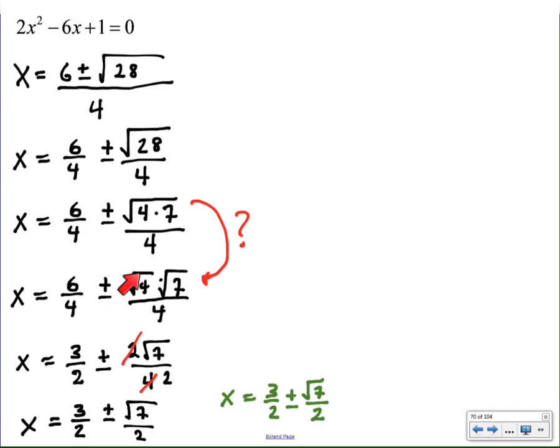Notice what I did was I took the square root of 4, which is 2, and then 2 over 4 reduces to 1 over 2. So basically I was able to simplify this fraction into the square root of 7 over 2. Apparently the square root of 28 over 4 is the same number as the square root of 7 over 2, which is the same as the green solutions that I got earlier.